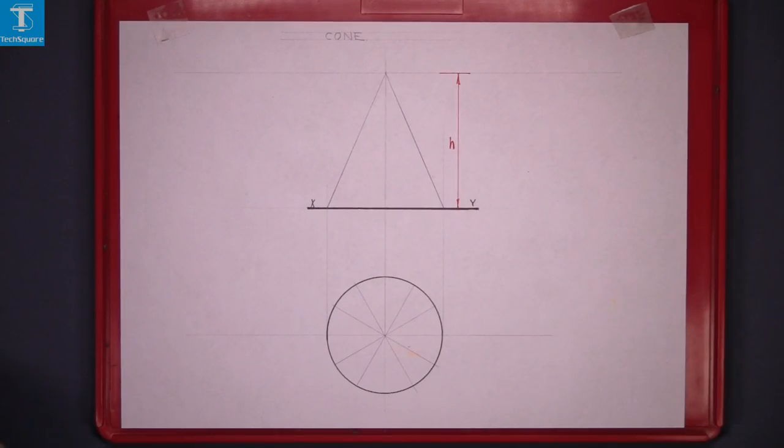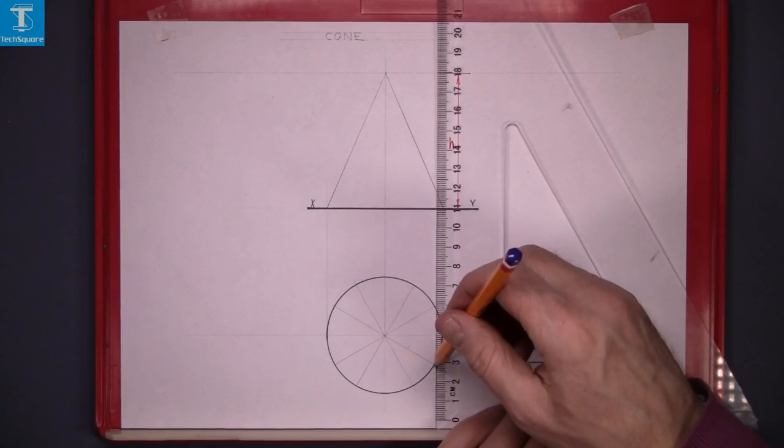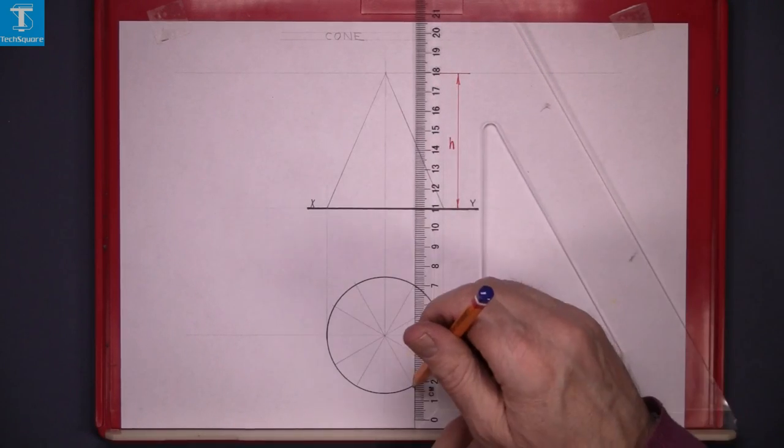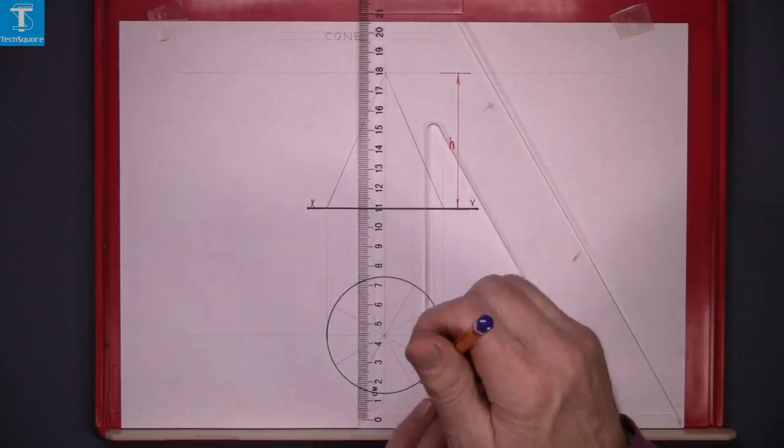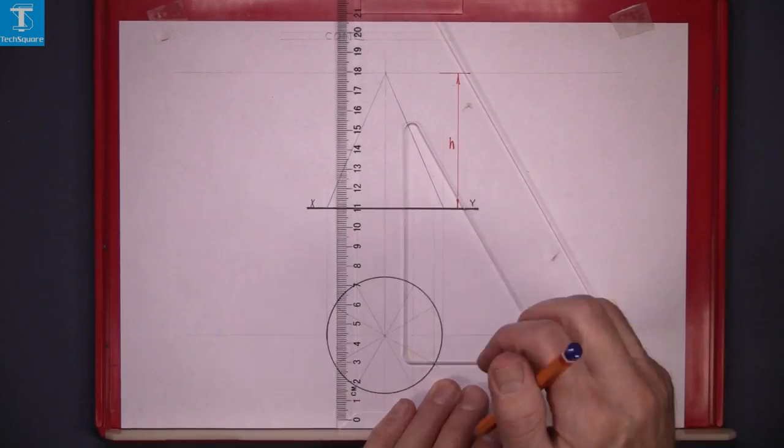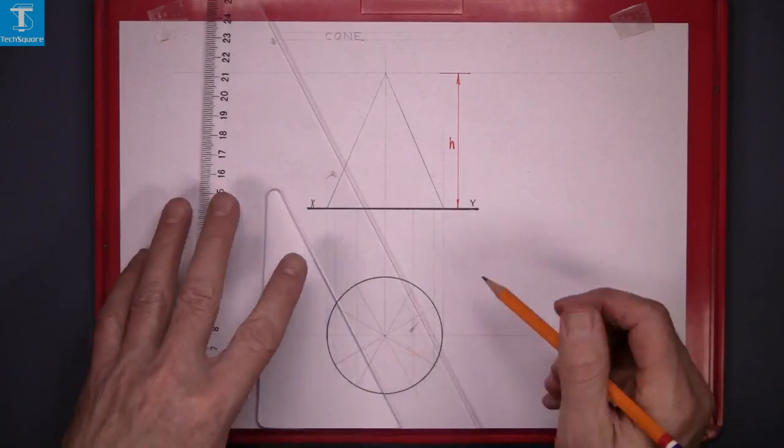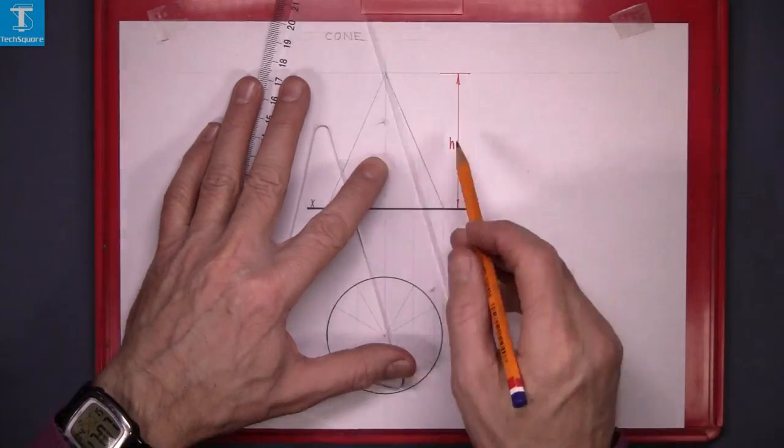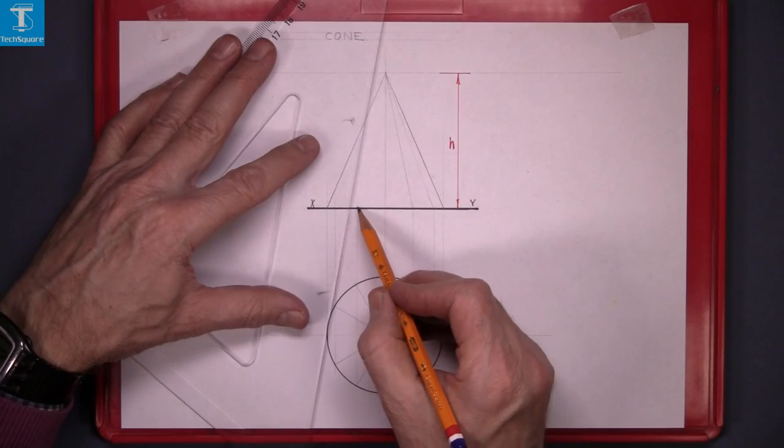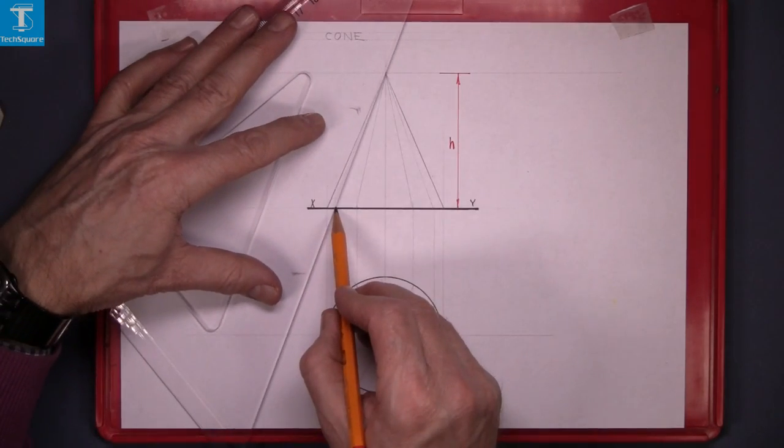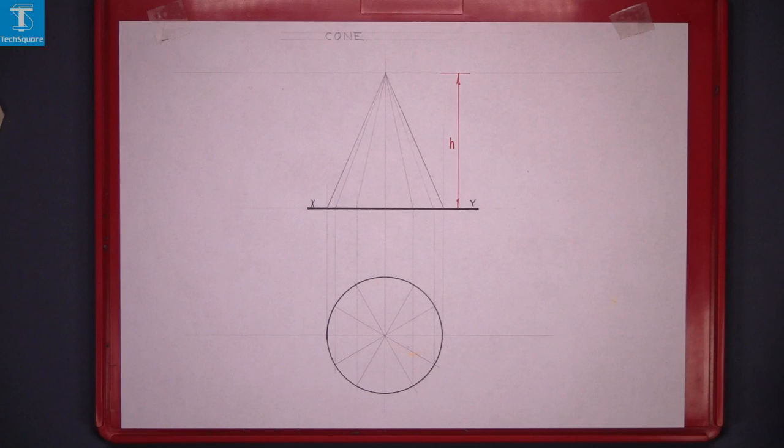Now bring the other points up from the plan and when you've got those points on the base join them up to the top. And that's the lines on the surface of the cone. And that's the cone drawn there.